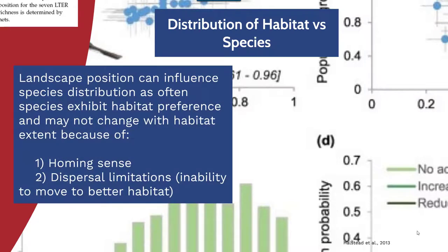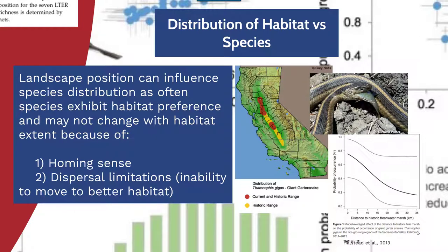The distribution of habitat versus species is another important thing to understand. Landscape position can influence species distribution, as species often exhibit habitat preference and may not change their habitat with respect to extent because of either some homing sense — needing to return to a certain area to reproduce — or dispersal limitations, which is an inability to move to a better habitat. In a study by Halstead et al. in 2013 looking at giant garter snakes, this particular map shows the current and historic range of these organisms.